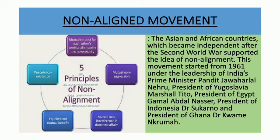On the screen you can see the five principles of non-alignment. These are: mutual respect for each other's territorial integrity and sovereignty; mutual non-aggression; mutual non-interference in domestic affairs; equality and mutual benefit; and peaceful coexistence. These are the five principles of non-alignment. This movement started from 1961 under the leadership of India's Prime Minister Pandit Nehru.